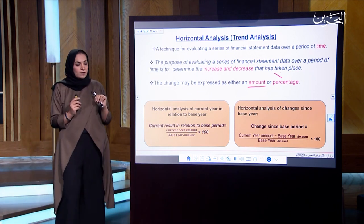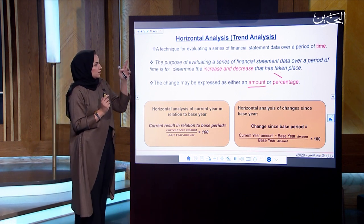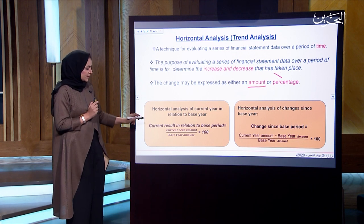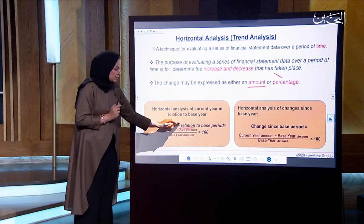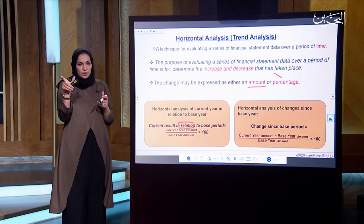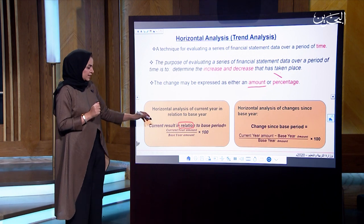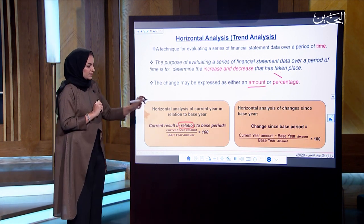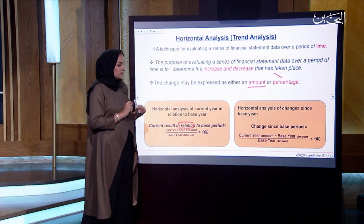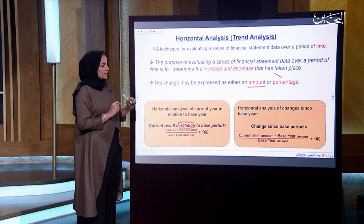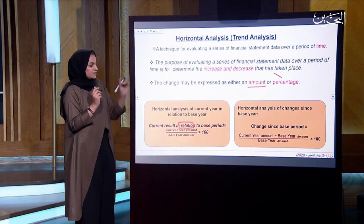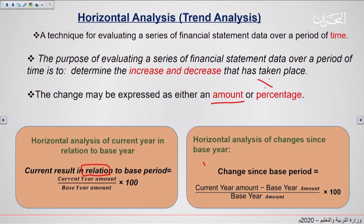We have two formulas for measuring horizontal analysis. The first formula — current results in relation to base period — is: current year amount divided by base year amount, multiplied by 100. The second formula — horizontal analysis of change since base year — measures increase or decrease: current year amount minus base year amount, divided by base year amount, multiplied by 100.